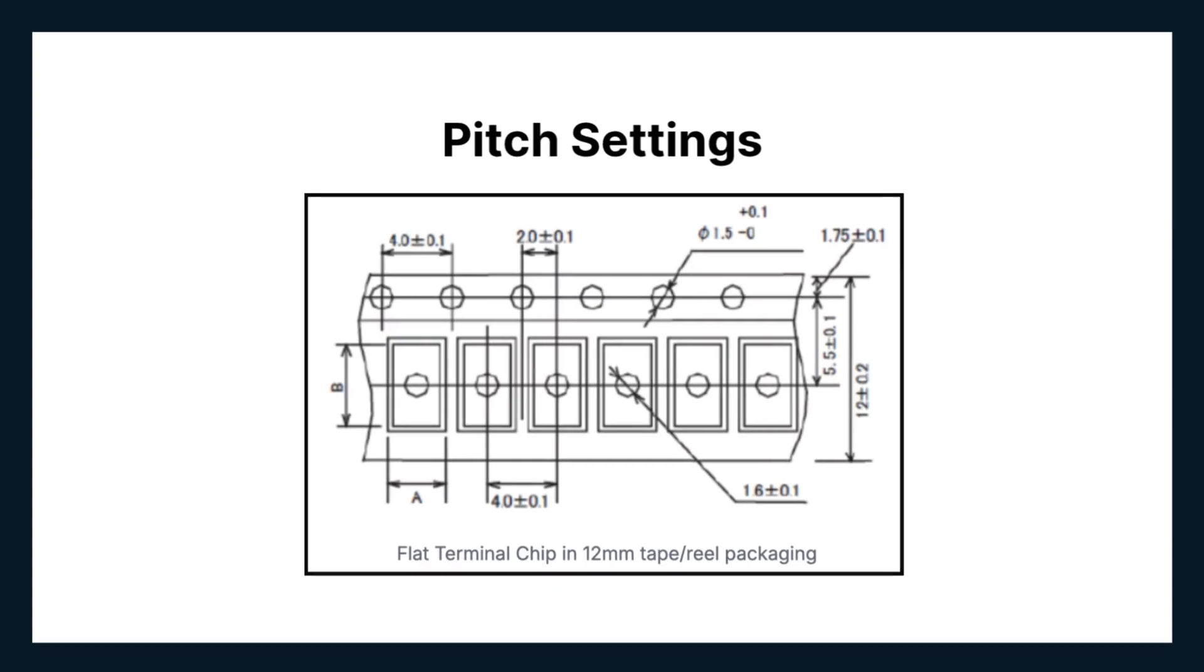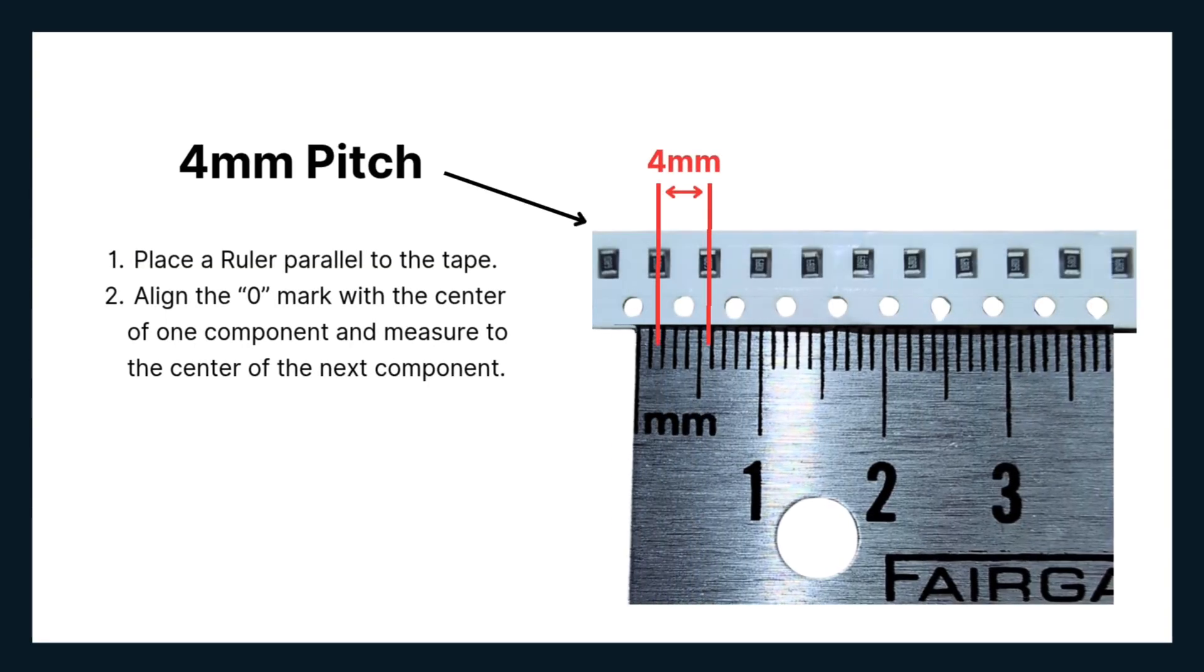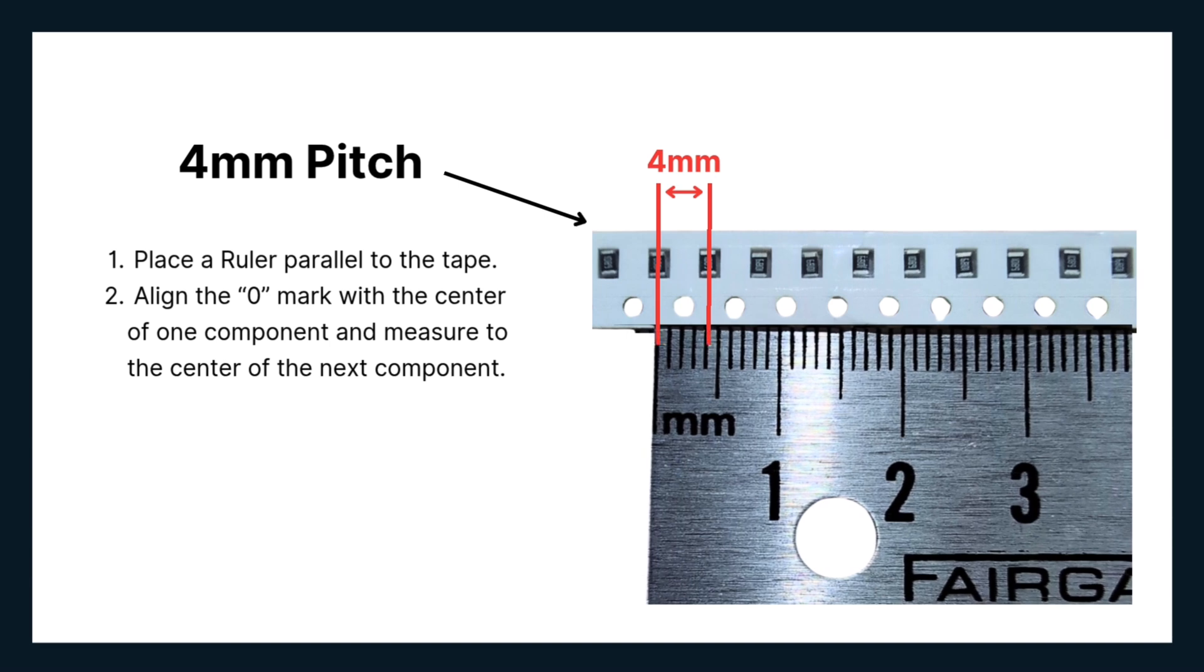To measure the pitch, place a ruler parallel to the tape. Align the zero mark with the center of one component and measure to the center of the next component. In this example, the pitch is 4mm.